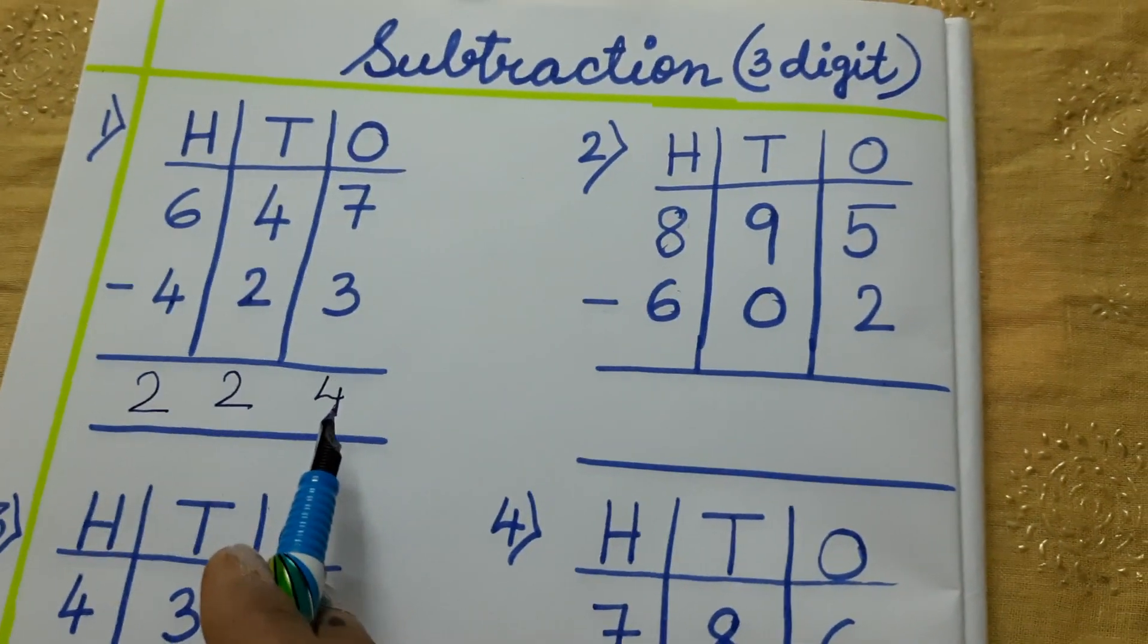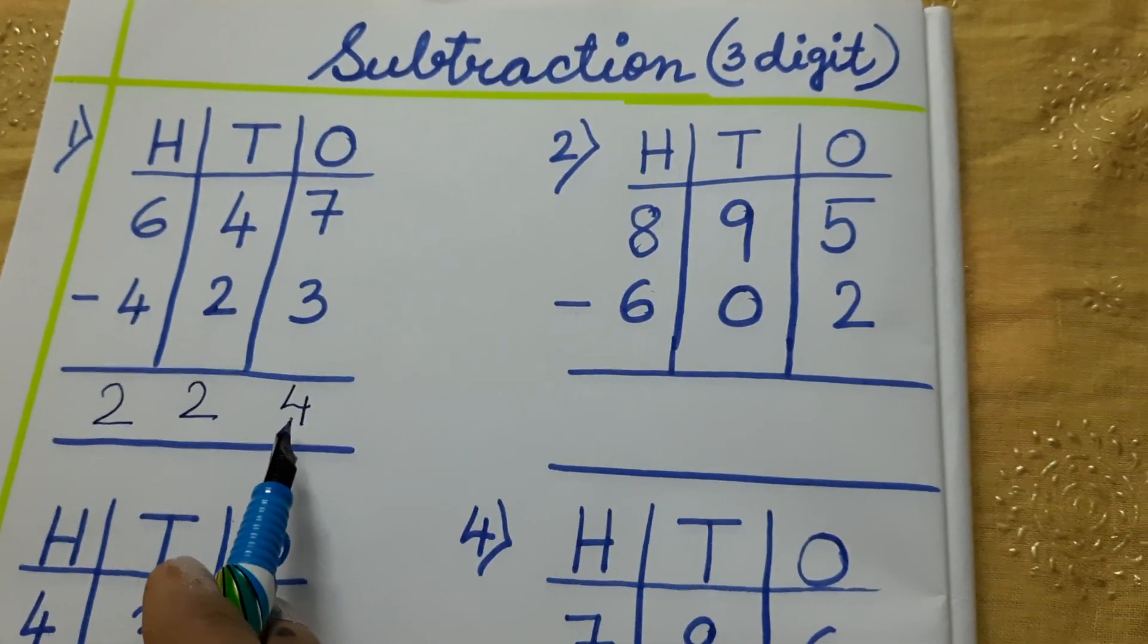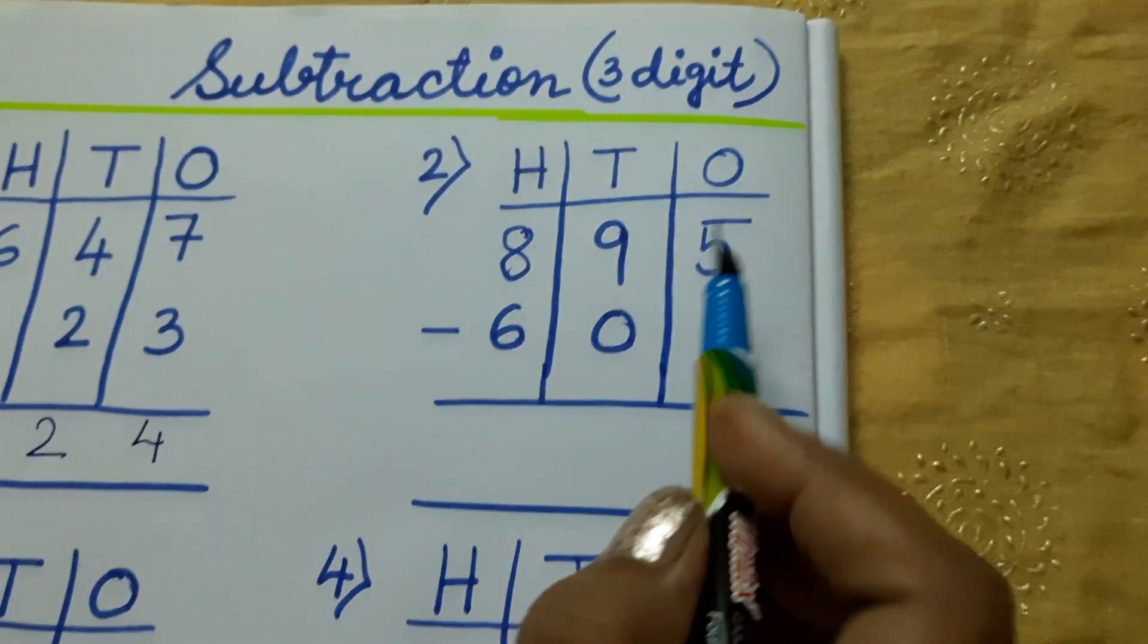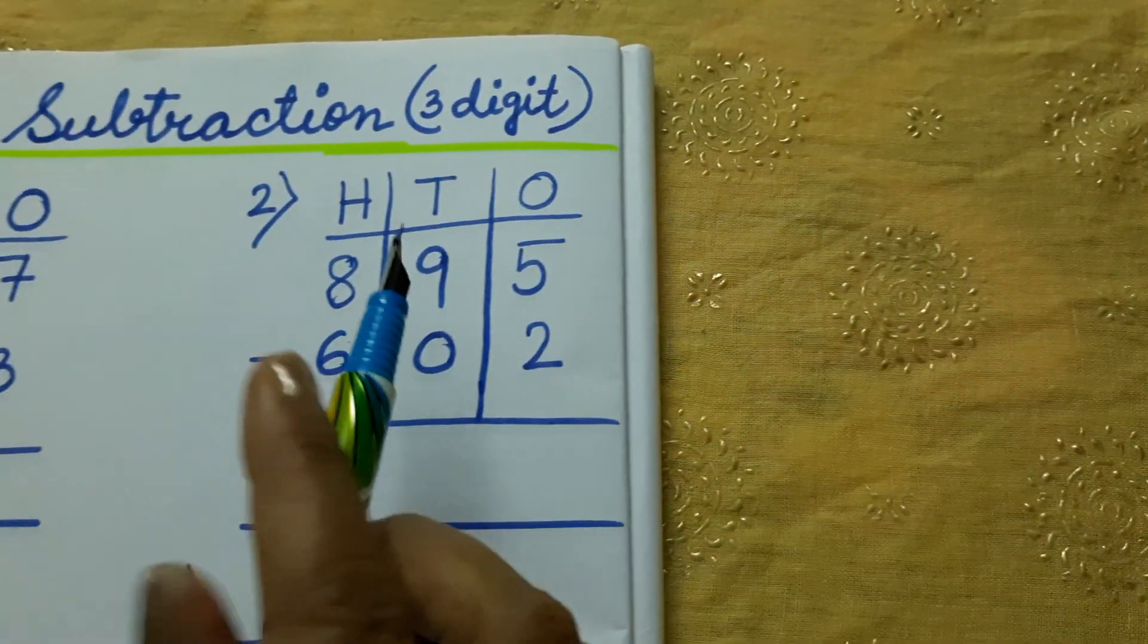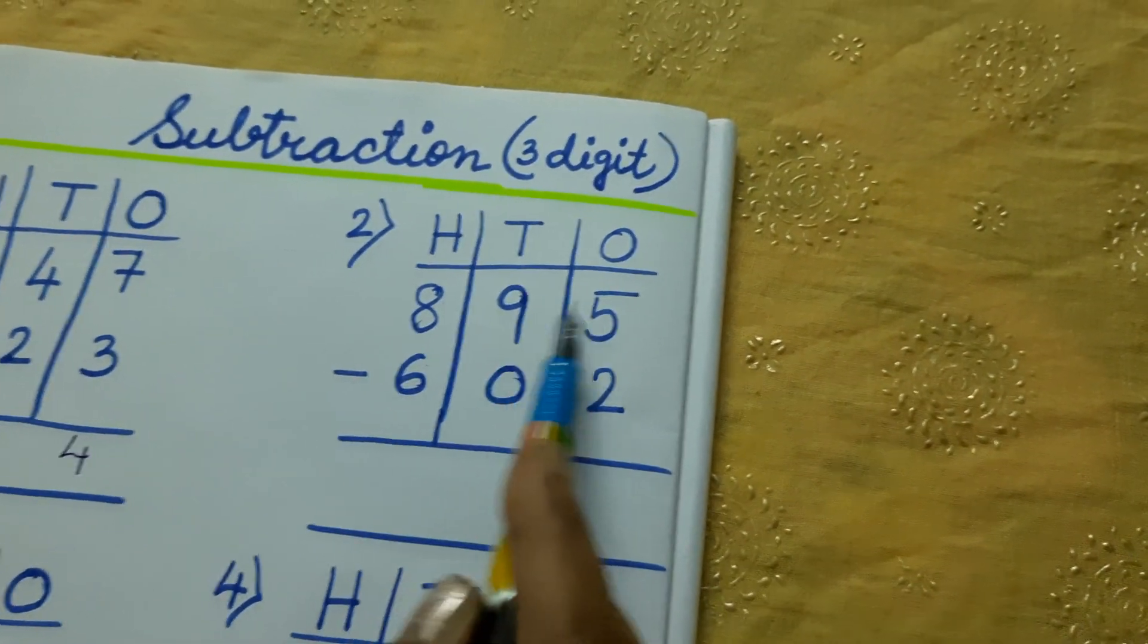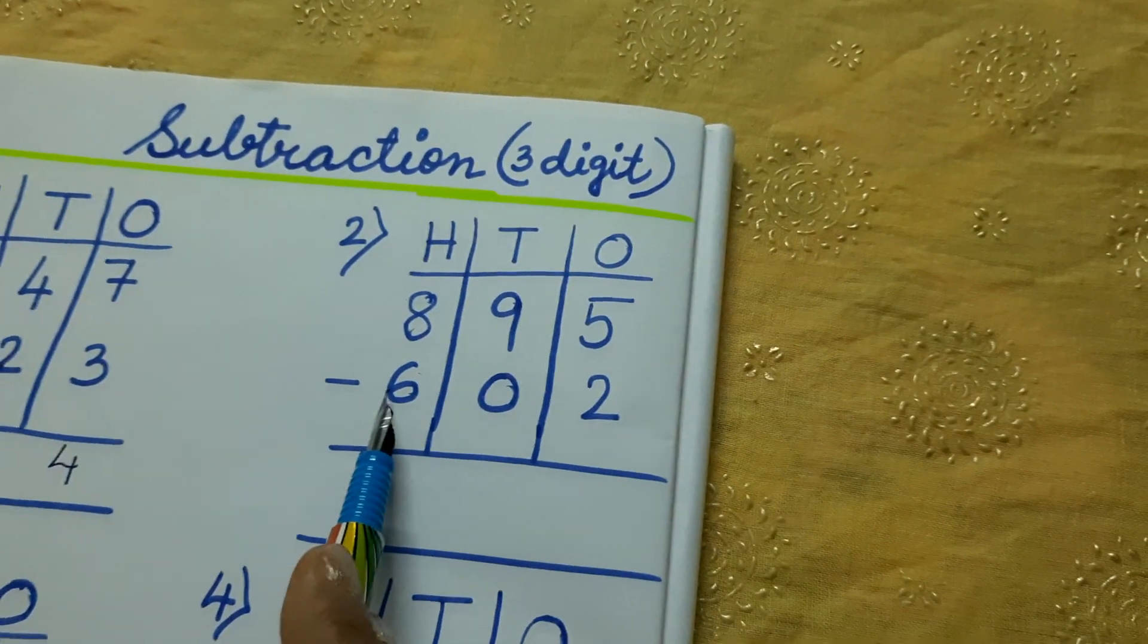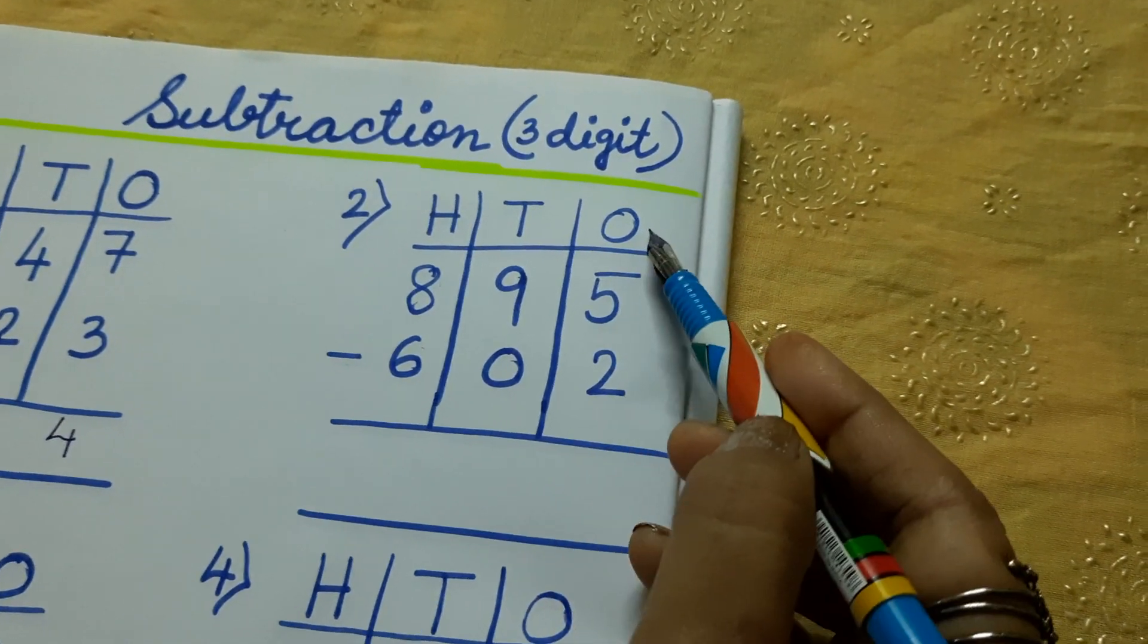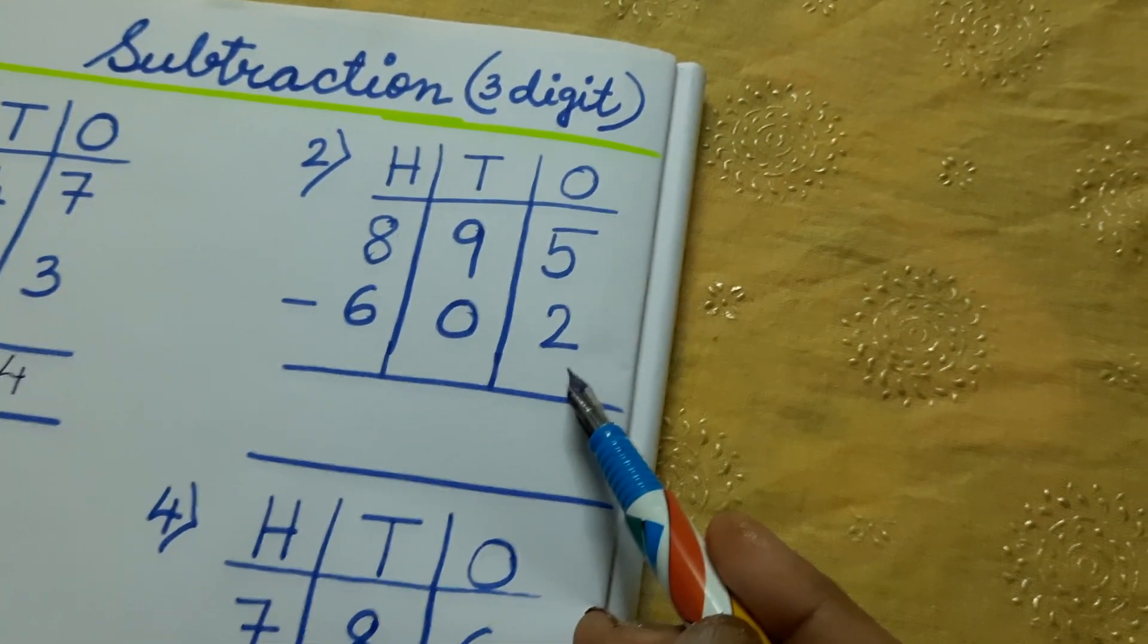Let us move to the next one. Similar way we will write 1s, 10s, 100. See? 895. It is the total number. 602.